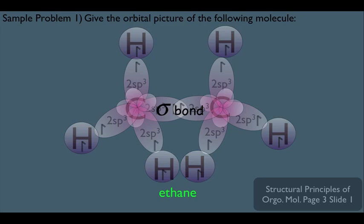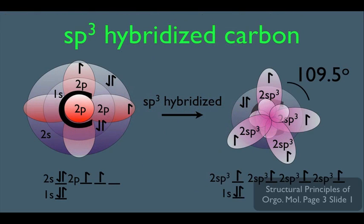So, in summary here, make sure you know again the orbital description and the electronic configuration of an sp3 hybridized atom.